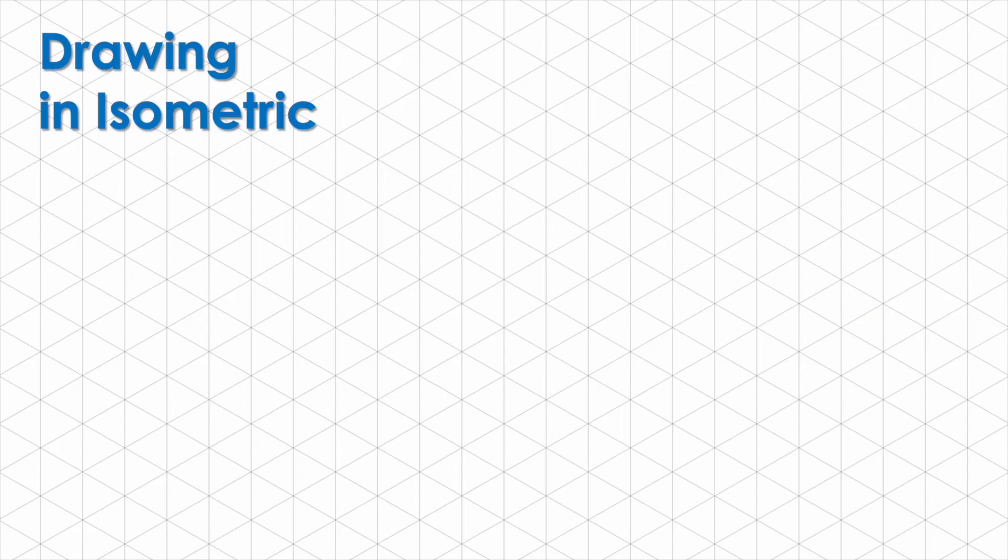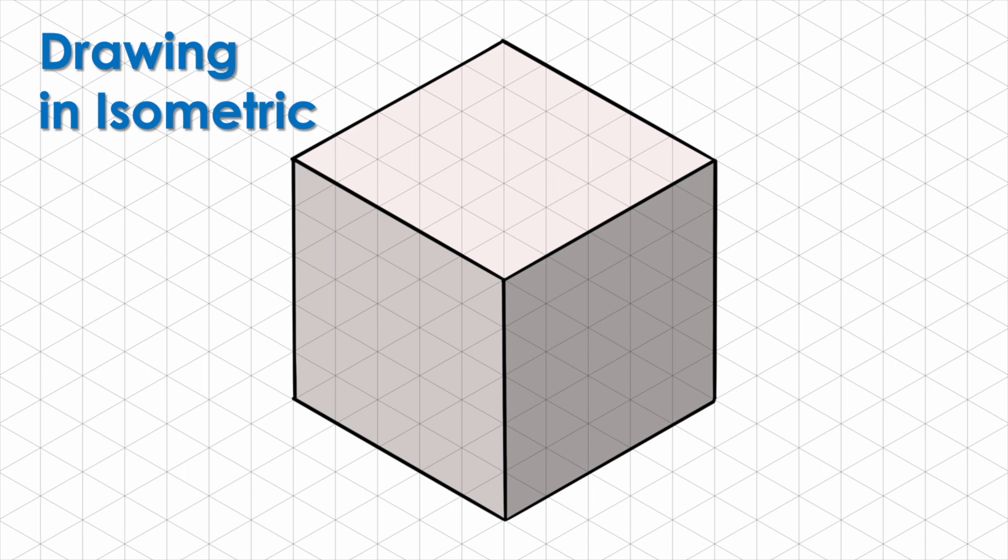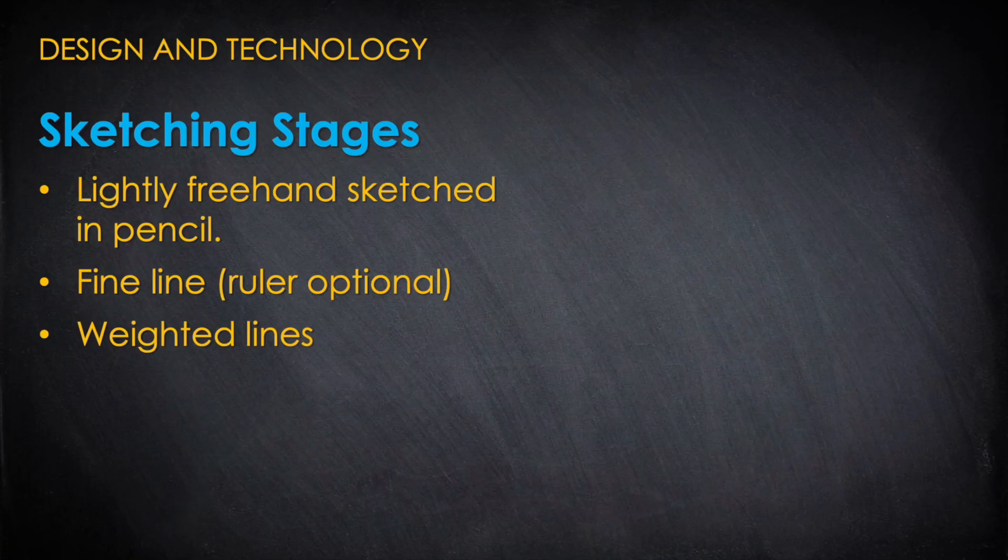Isometric sketching uses a grid where the angles between the axes are all 120 degrees or 30 degrees from the horizontal line, making it easier to visualize and construct complex shapes accurately.